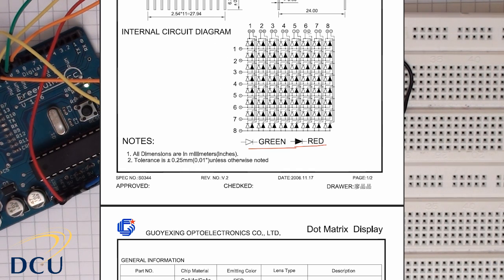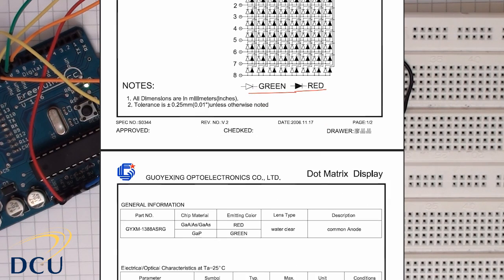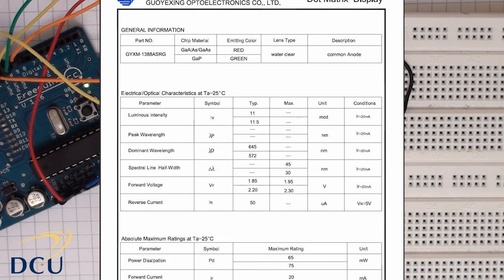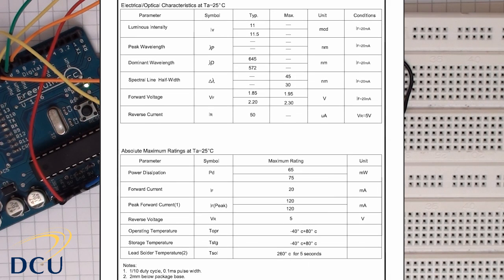Each one of the rows is connected to the anode side of all of the LEDs on that row, so we can say that this particular configuration is common anode configuration.